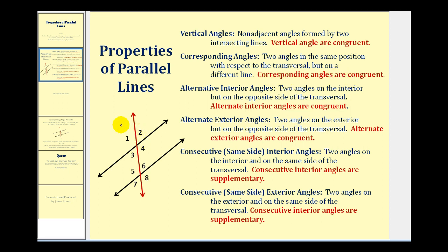So if we view angle one as being in the upper left-hand corner of the intersection of the transversal and the first black line, angle five is also in the upper left-hand corner of the intersection of the transversal in red and the second black line. These are corresponding angles, and they are also congruent angles, as well as angle three and angle seven, angle two and angle six, as well as angle four and angle eight.